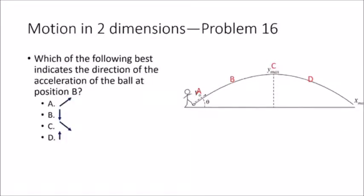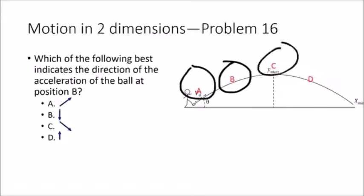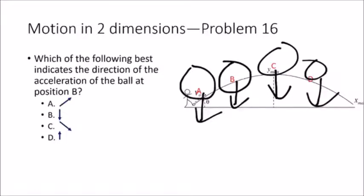Problem sixteen uses the same football scenario but asks for the direction of acceleration at point B. During any projectile problem, there is no horizontal acceleration. The only acceleration is vertical, caused by gravity, which always acts straight down regardless of whether we're at point A, B, C, or D. The acceleration is always straight down — answer B.